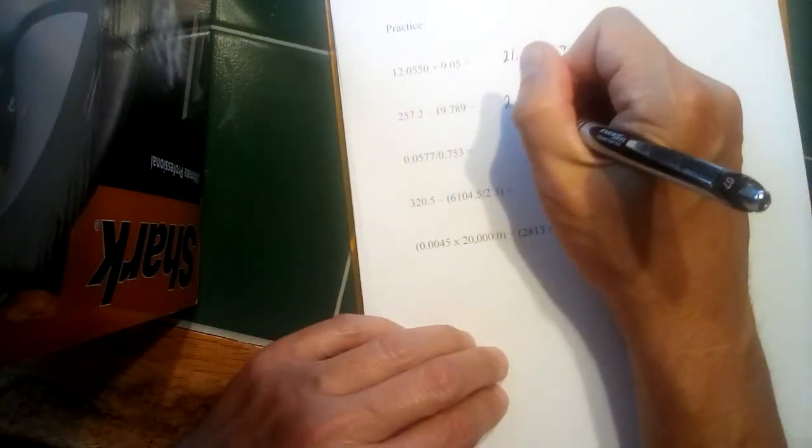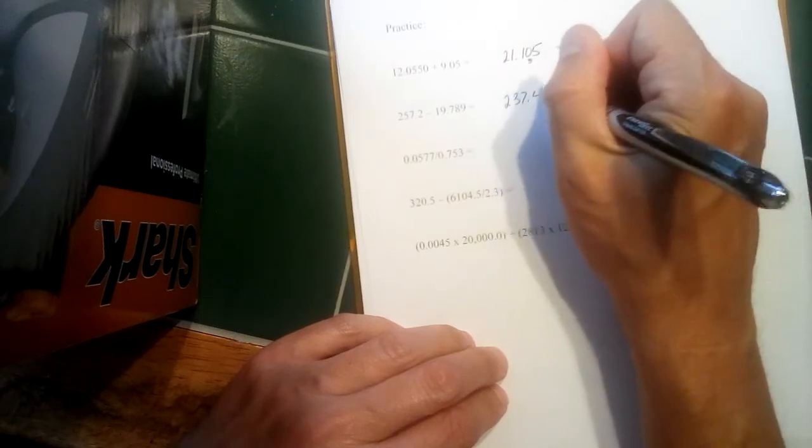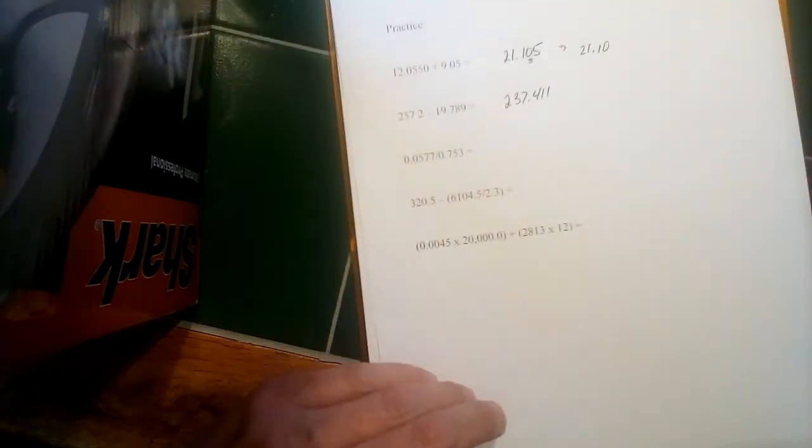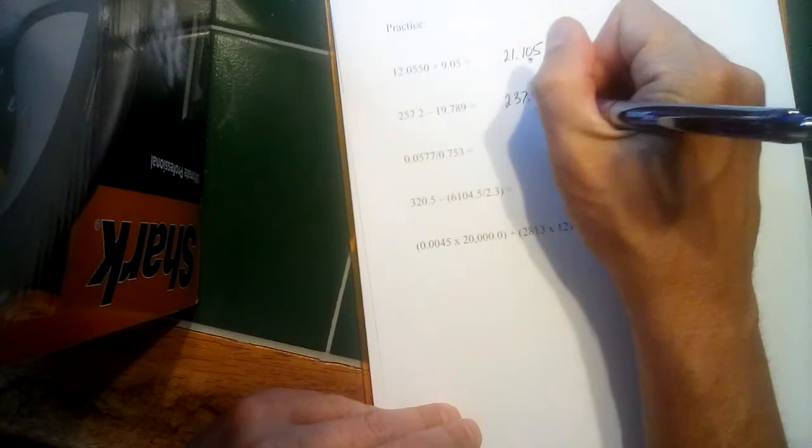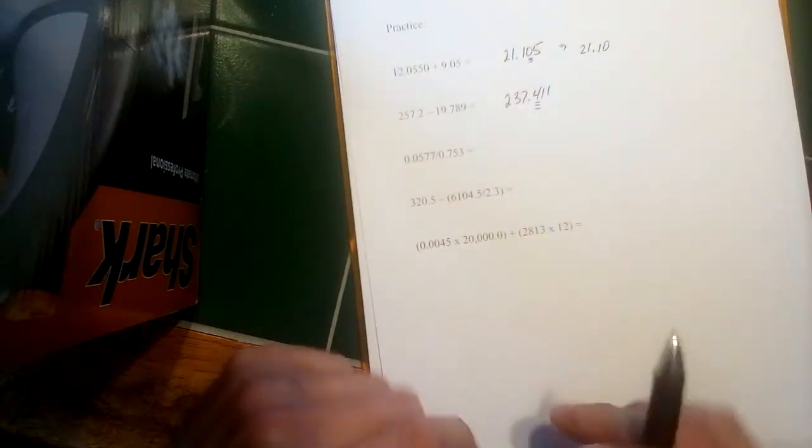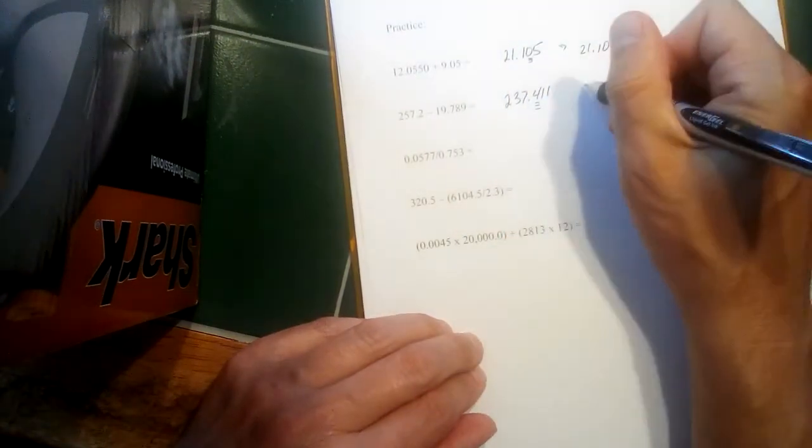So 257.2 subtract 19.789. And my calculator says 237.411. But again, we're evaluating our data.